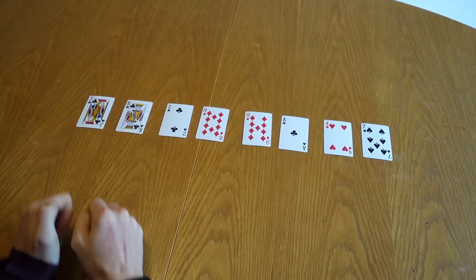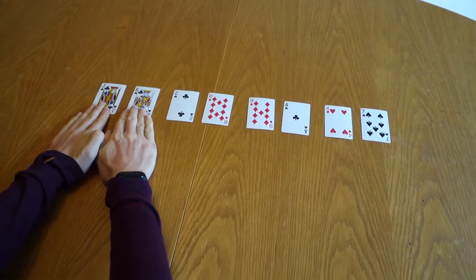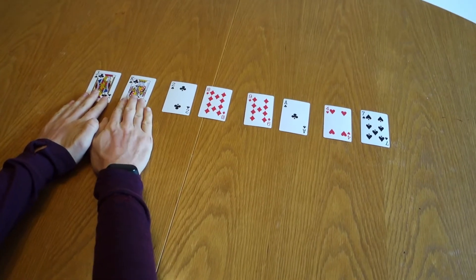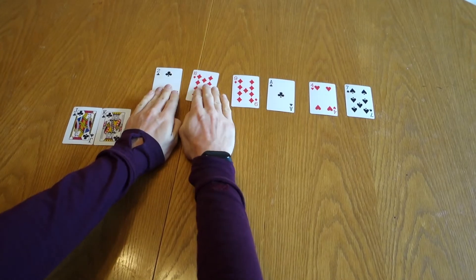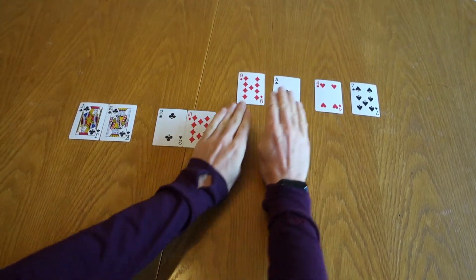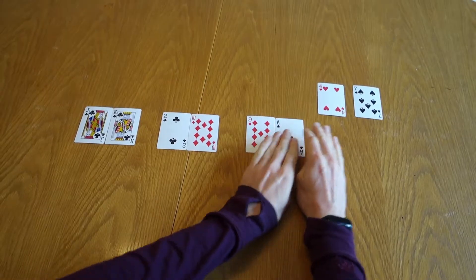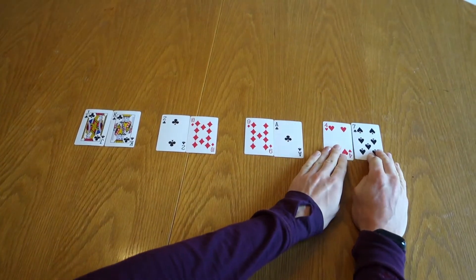And then we merge. So merge these two cards. Jack is less than king. Jack, king. Two is less than ten. Done. Nine is less than ace. Done. Four is less than seven. Convenient.